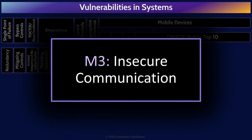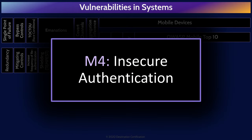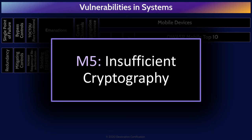Insecure communications refers to the fact that most mobile devices communicate with a server across the internet. Any data in transit could potentially be intercepted and read by an attacker. To secure data in transit, encrypt it using protocols like TLS and authenticate the server with certificates. Insecure authentication refers to an attacker figuring out how a mobile application calls the backend server, then bypassing the app and sending requests directly to the server, bypassing the authentication mechanisms built into the mobile app. To prevent this, perform authentication on the server side. Insufficient cryptography means a mobile device is using weak encryption algorithms or algorithms that were poorly implemented — the solution is to use good algorithms and implement them properly.